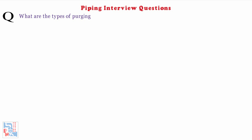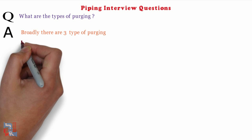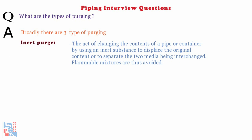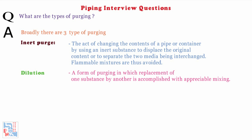What are the types of purging? There are three types of purging. Inert purging is the act of changing the contents of a pipe or container by using an inert substance to displace the original content or to separate the two media being interchanged — flammable mixtures are thus avoided. Next is dilution, which is the form of purging in which replacement of one substance by another is accomplished with appreciable mixing.